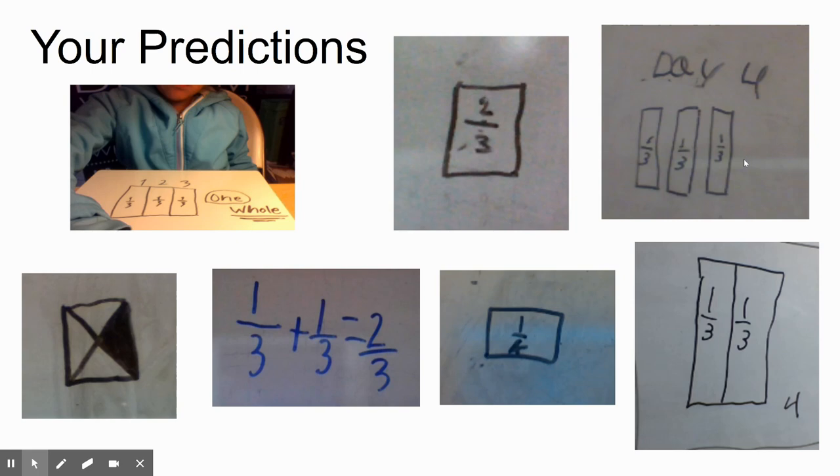So you might see your work here, or you might see work that looks like your thinking. I was pretty impressed with what people were trying to do, thinking about patterns and what they already know about fractions. I see somebody wrote two-thirds, which makes me think they're using that counting number—that we had a one-third, and now we're going to have two-thirds.